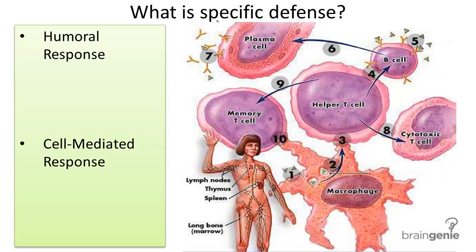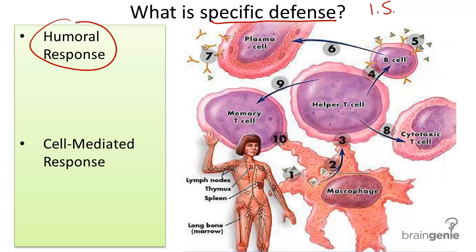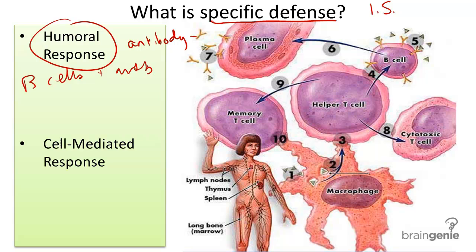What is specific defense? There are two types of targeted responses in the immune system to a pathogen. First, the humoral response, sometimes called the antibody-mediated response. This is because it uses B cells and antibodies to react with antigens. Antigens are just another term for the foreign substance, like a pathogen.